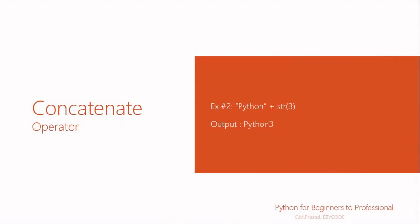Here is an example: the first is a string 'python', and we are trying to concatenate the numeric value 3 with it. First, we convert the integer 3 into a string using str(), and then this string is concatenated with 'python'. The output will be 'python 3'.